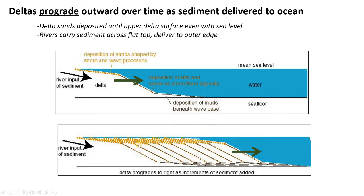As the delta delivers loads of sand to the delta front, the river is also now flowing over its own delta top — literally flowing further out into the ocean than when it first started. This is progradation, and it allows both the delta and the river to advance further out into the ocean or lake. This is what makes these constructional deposits.